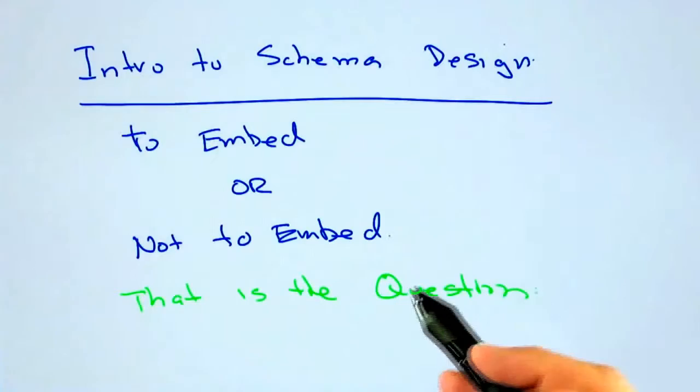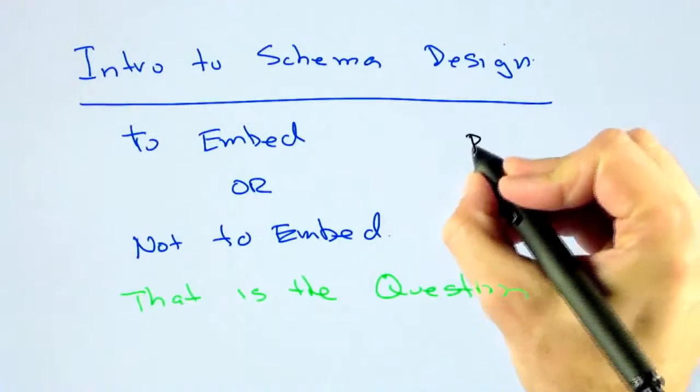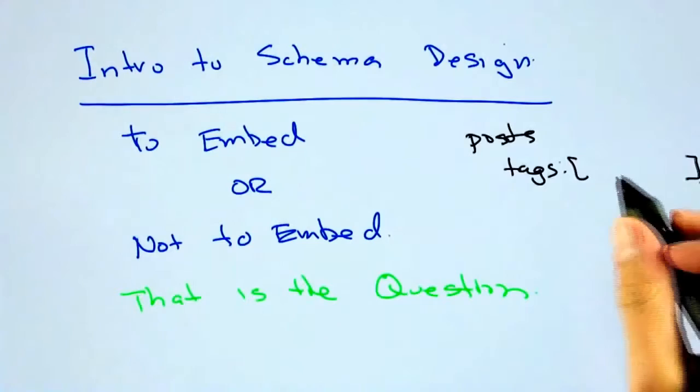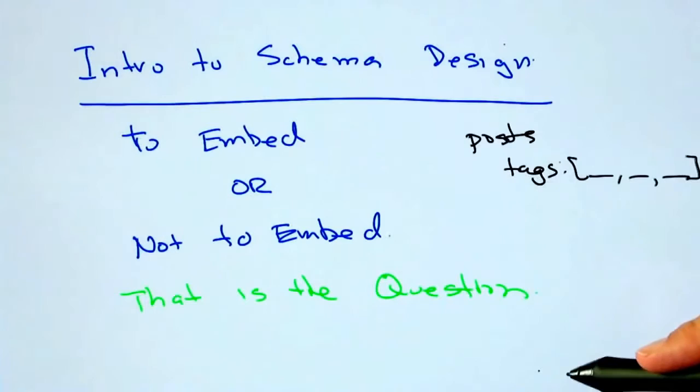For example, in the schema we finally decided on for this problem, the posts collection had a tags array right inside it. The tags array had tag names that potentially might be duplicated across different posts. So why embed that versus put it into a separate tags collection?